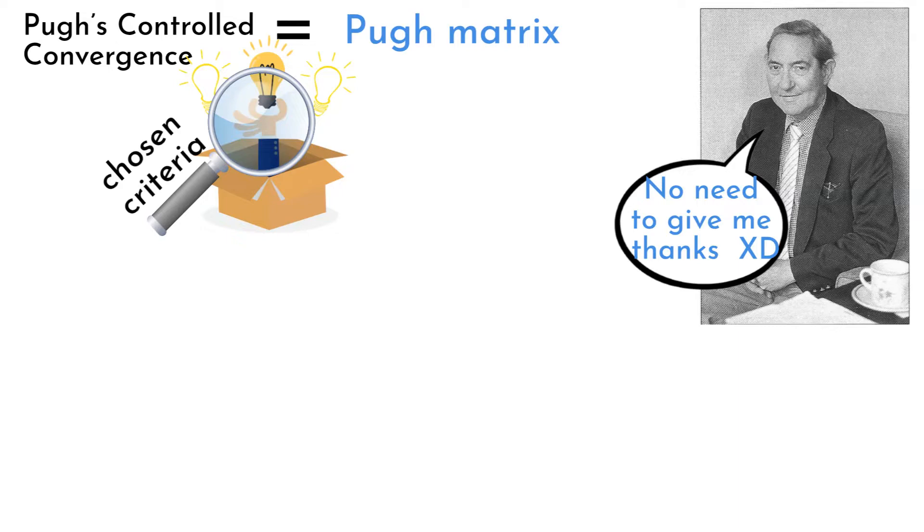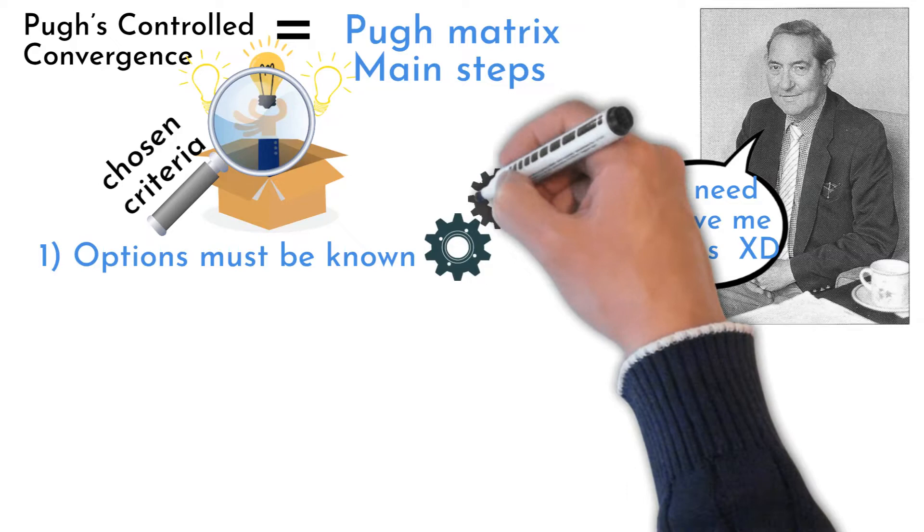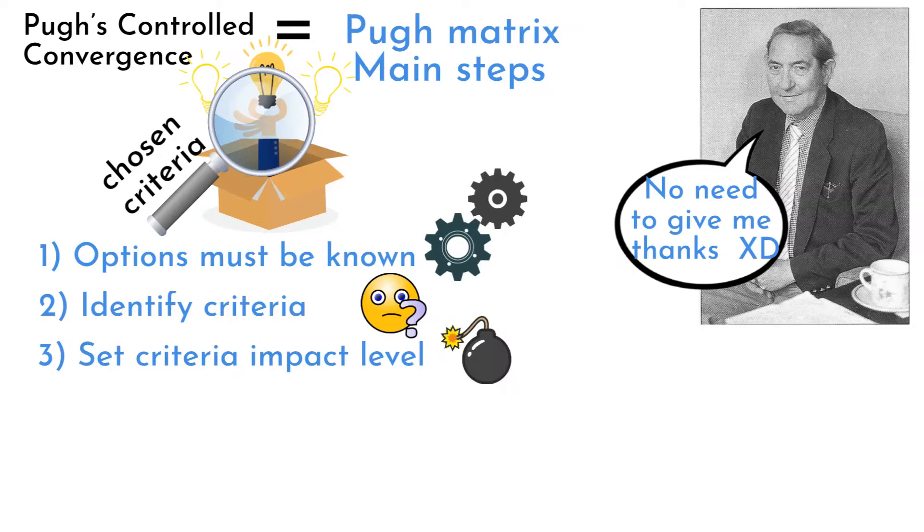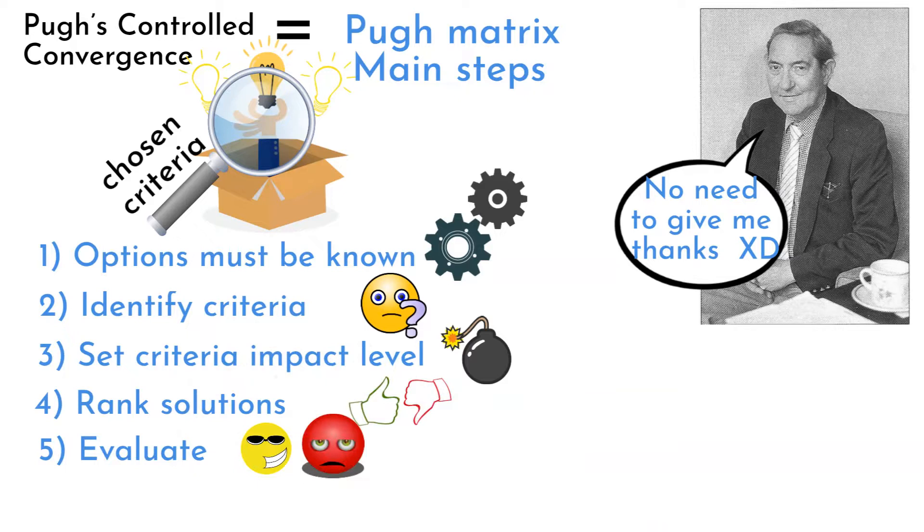The main steps to create and work with Pugh Matrix are: understand solutions or options you need to choose from, identify decision criteria, weight each criteria by impact level, rank each solution in each criteria, evaluate results, double check your solution.